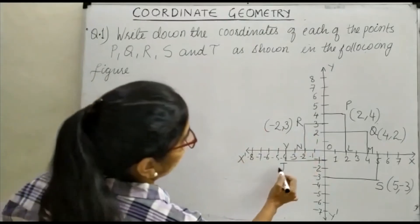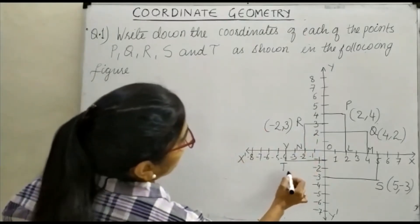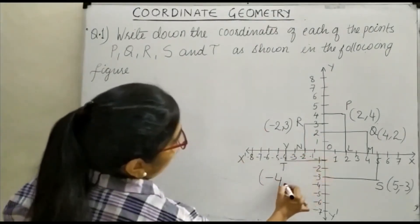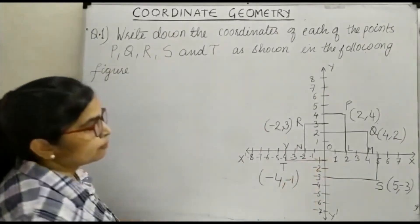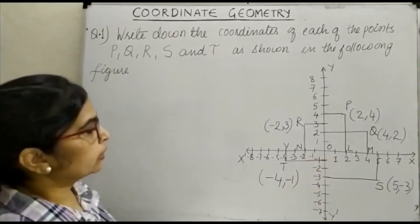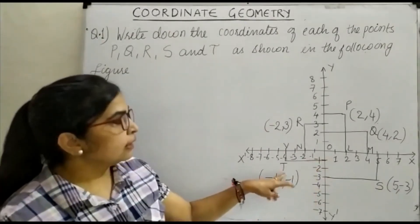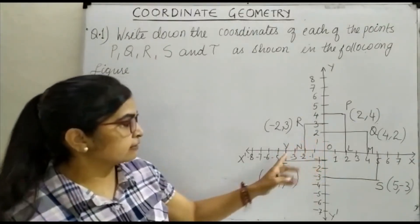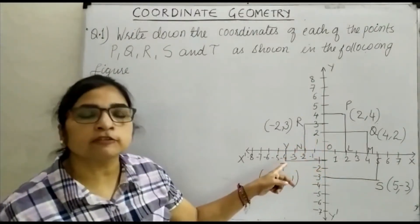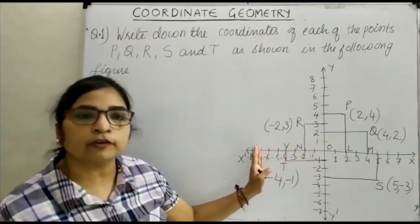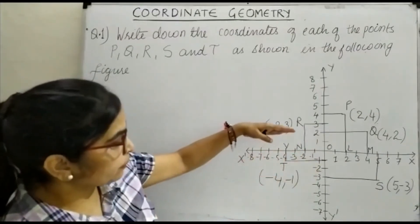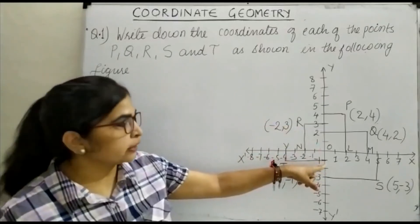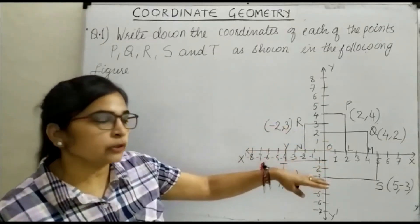For point T, the x-coordinate is minus 1. The distance from the y-axis is 4 units to the left of the origin, and the distance from the x-axis is 1 unit below the origin.